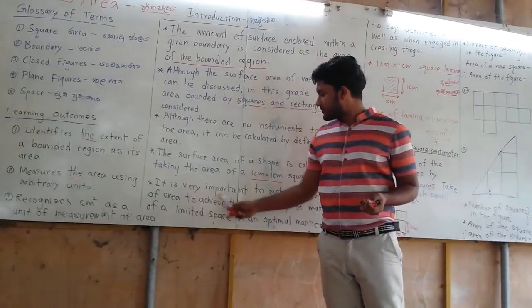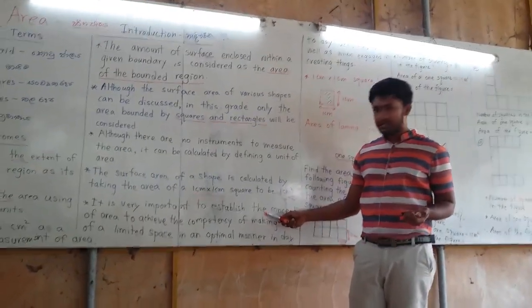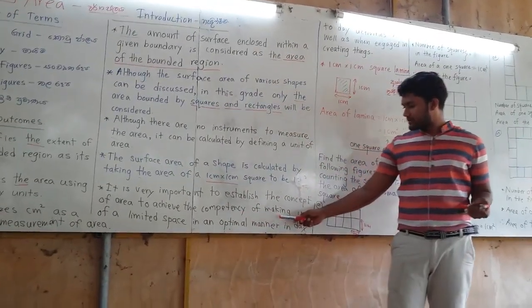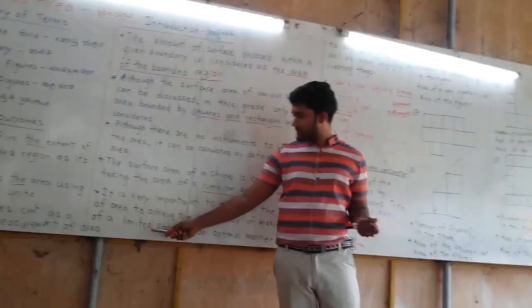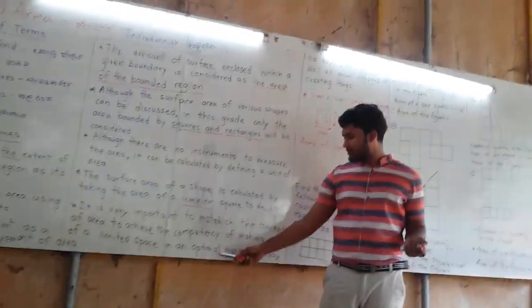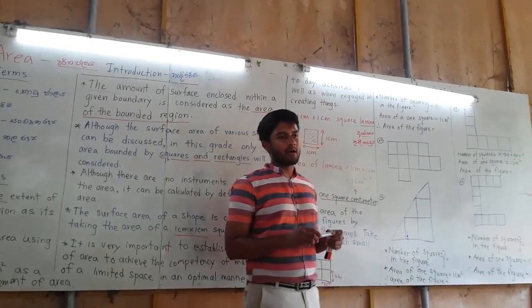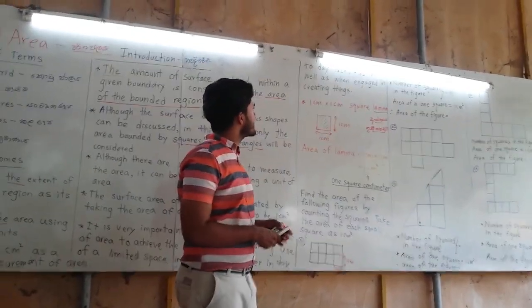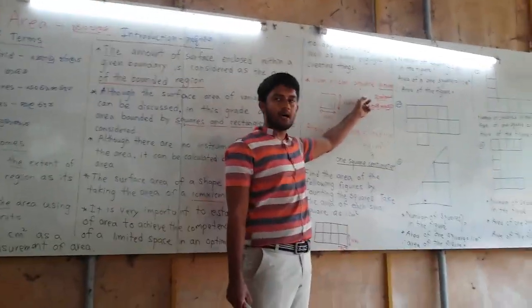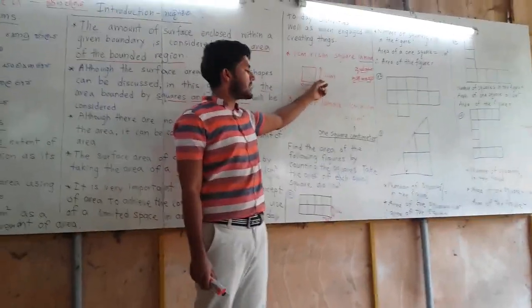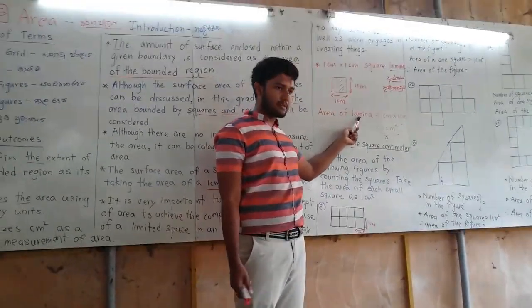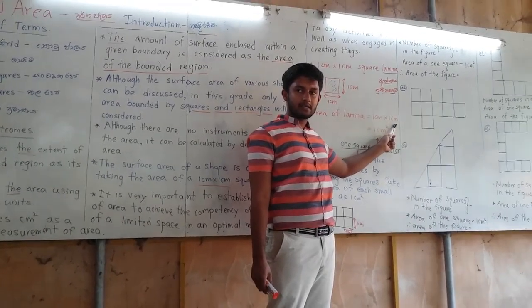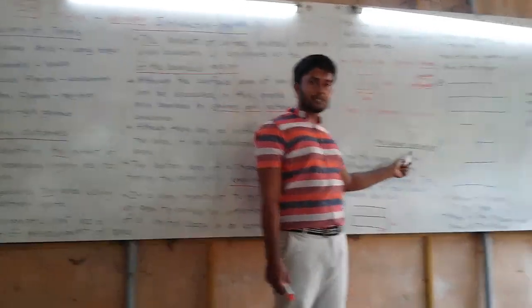It is very important to establish the concept of area to achieve the competency of making use of limited space in an optimal manner in day-to-day activities. To calculate the area, we take 1 centimeter into 1 centimeter square. Area is equal to 1 centimeter multiplied by 1 centimeter, which equals 1 square centimeter.